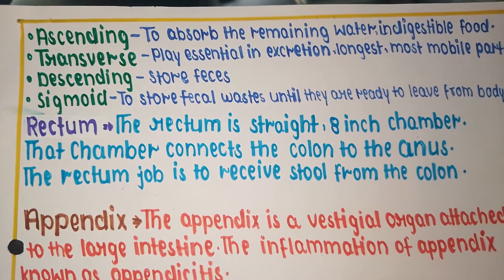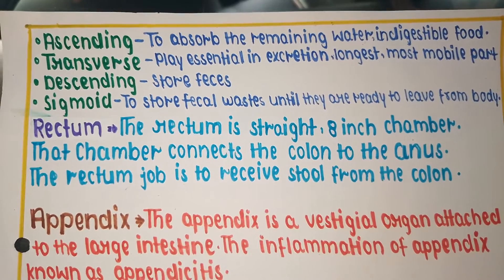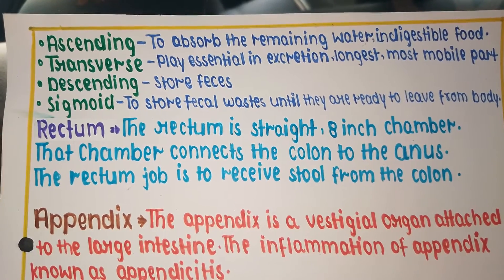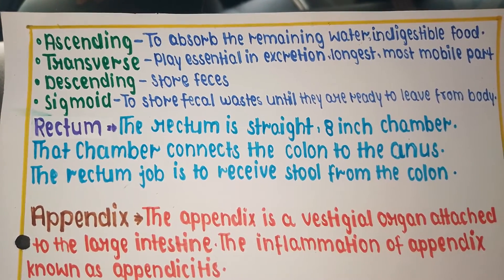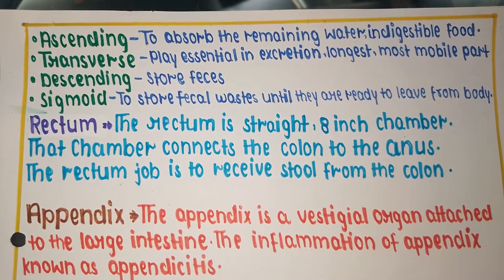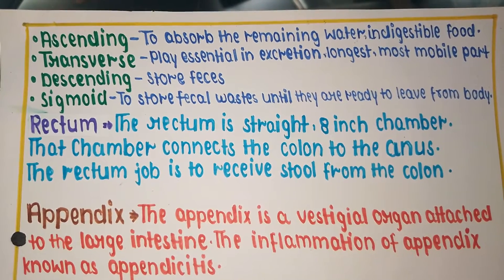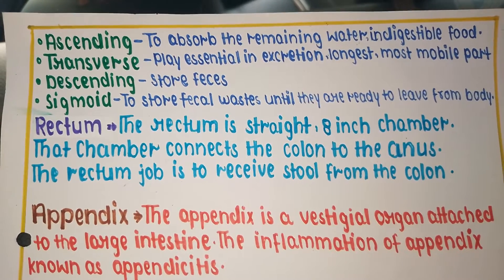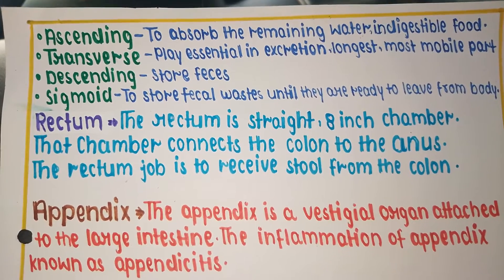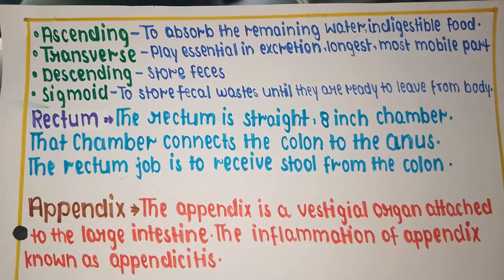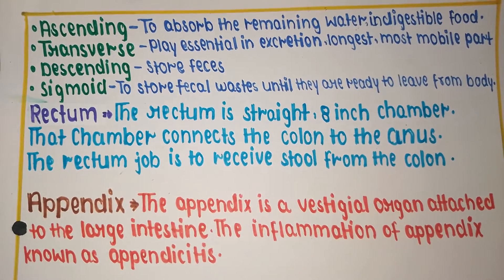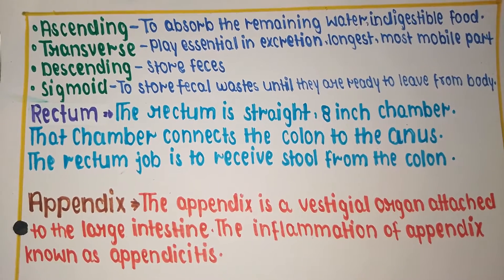First is the ascending colon, which absorbs remaining water and undigested food. The transverse colon plays an essential role in excretion and is the longest and most mobile part. The descending colon stores feces, and the sigmoid colon stores fecal waste until it is ready to be removed from the body.